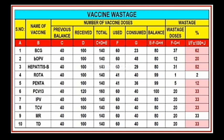Number one — BCG for example: 40 doses previous balance. 40 plus 100 equals 140 total doses. Used: 60 doses, consumed: 23 doses, balance: 80 doses, wastage: 37 doses — which means 62 percent. This is shown in red color because the vaccine wastage is more than the policy limit of 50 percent.